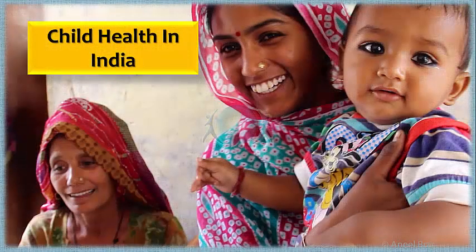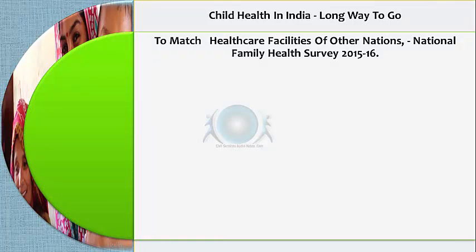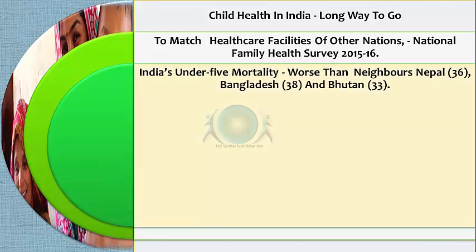Turning to India specifically: the health of Indian children is improving, but there is still a long way to go. Almost all childhood health indicators have improved, but India still needs to match the health facilities of advanced nations, as revealed by the National Family Health Survey of 2015–16. India's under-five mortality rate is substantially worse than that of poorer neighbors like Nepal, Bangladesh, and Bhutan.